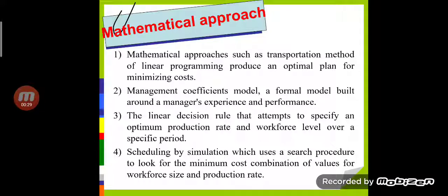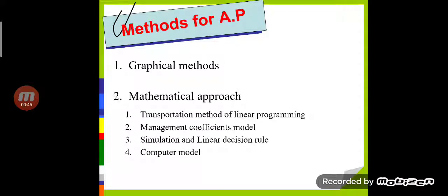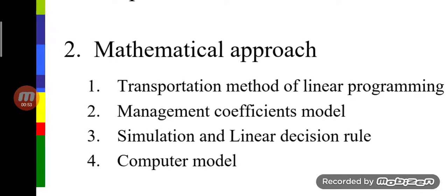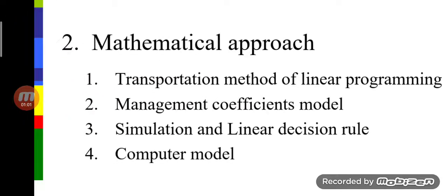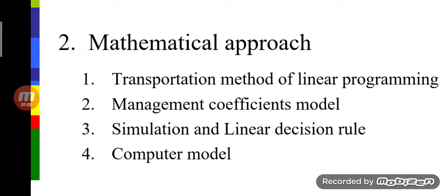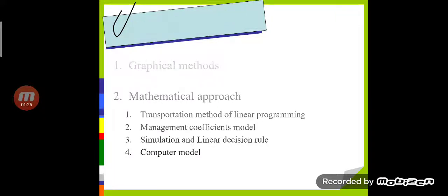In aggregate planning, there are two methods: one is graphical methods and the second one is mathematical methods. Under the methods for aggregate planning, we have learnt about the graphical methods. Now it's time to learn about the mathematical approach. The mathematical approach covers four points: transportation method of linear programming, management coefficient model, simulation and linear decision rules, and computer model.